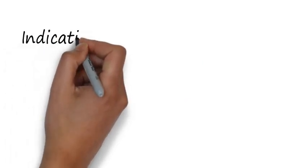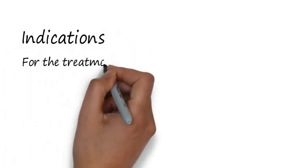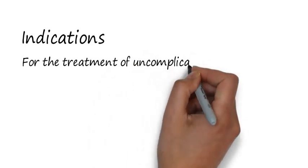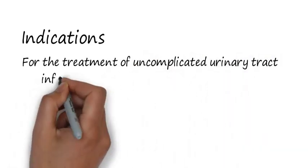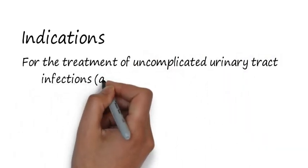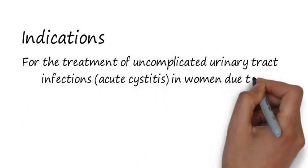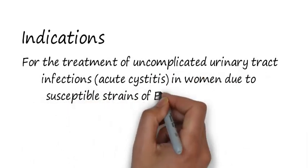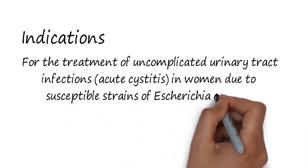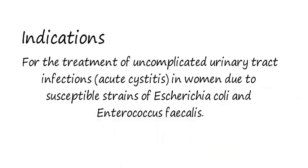Now we have the indications. Phosphomycin is the drug of choice for the treatment of uncomplicated urinary tract infection, specifically acute cystitis in women due to susceptible strains of E. coli and Enterococcus faecalis.